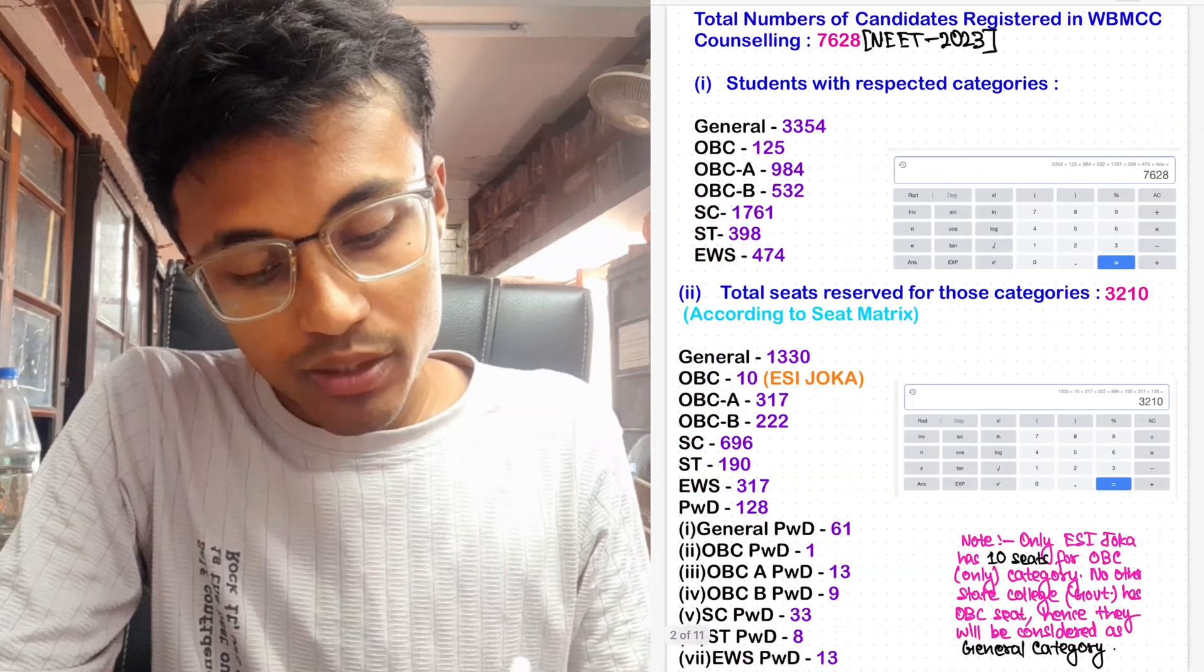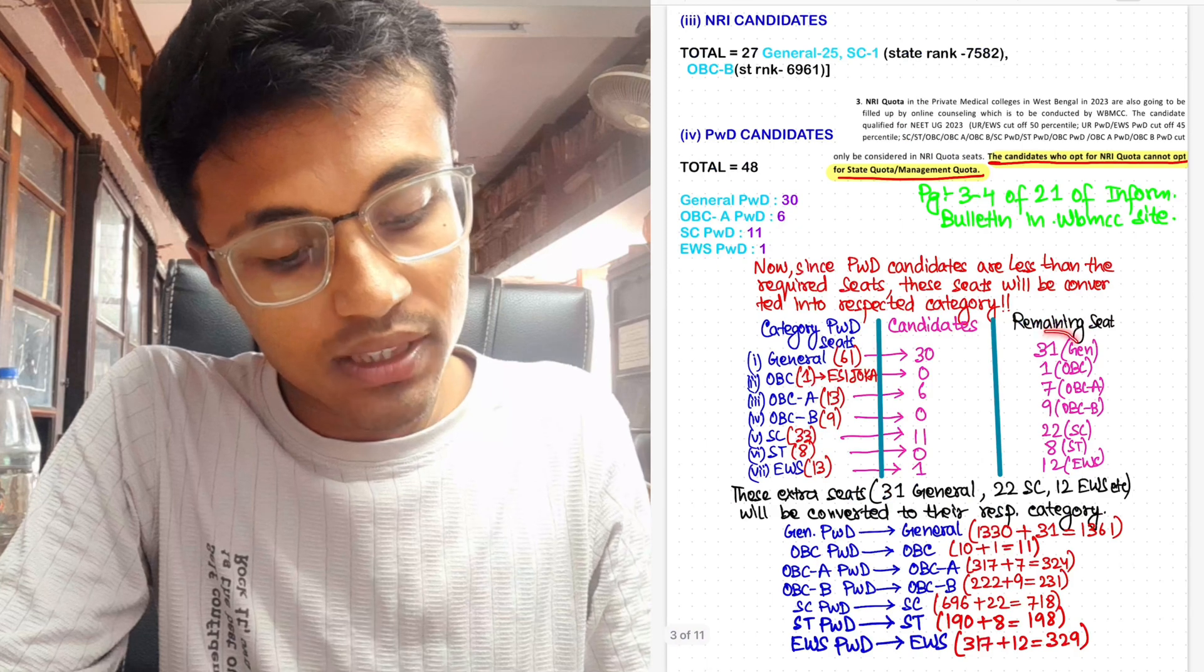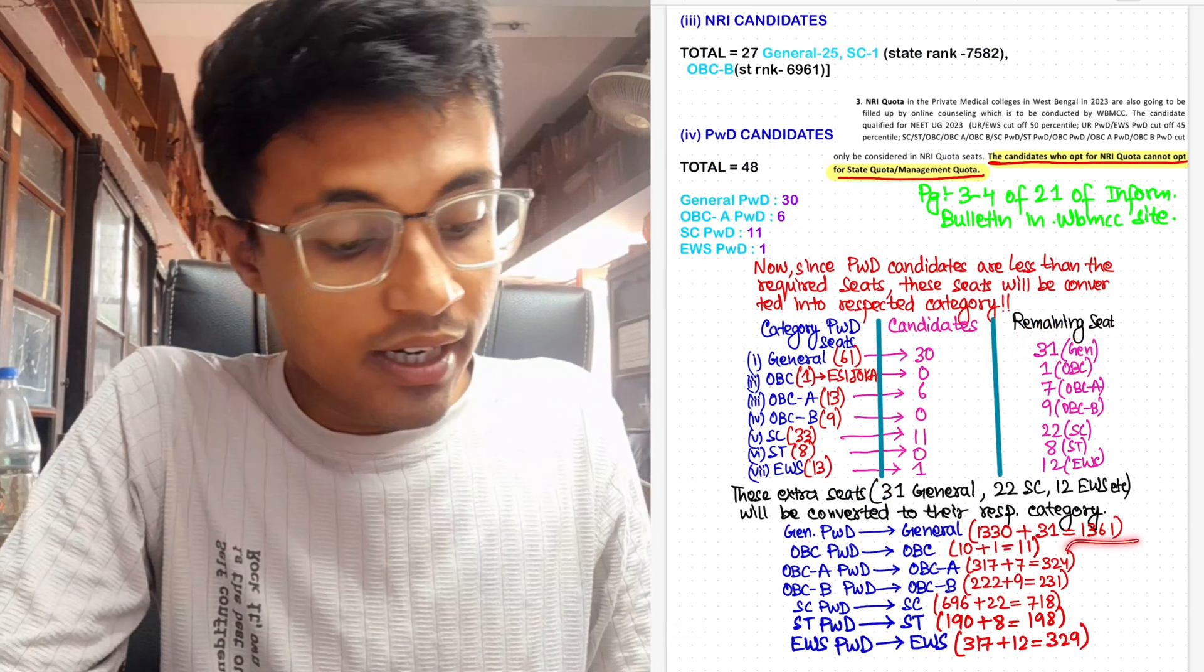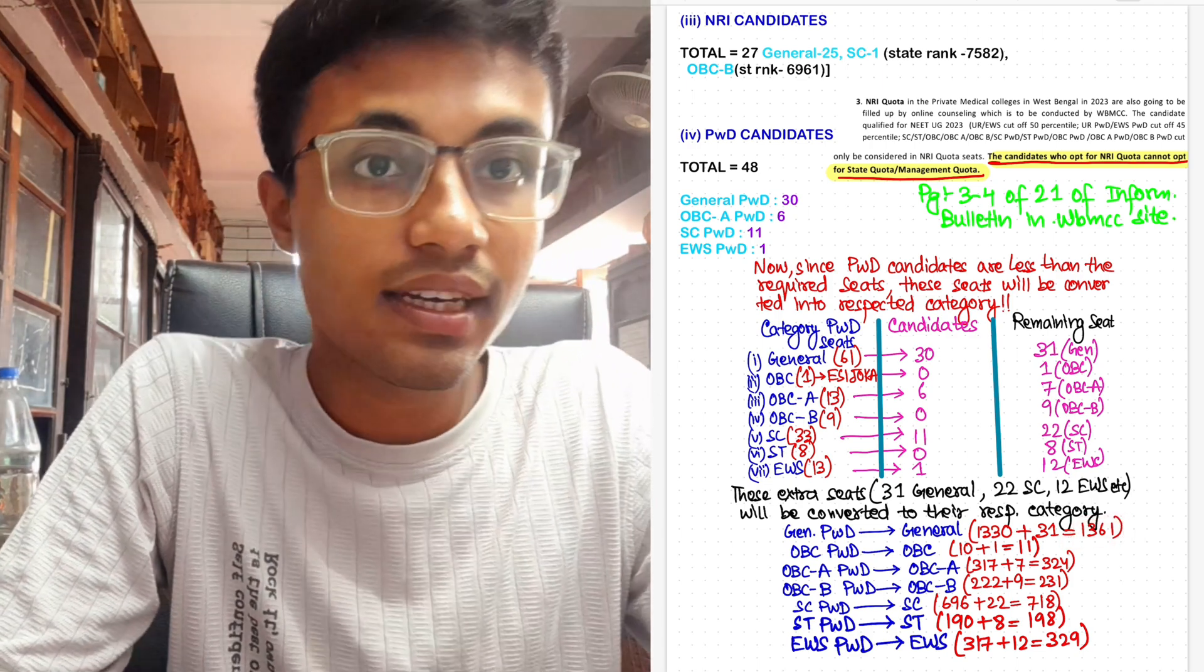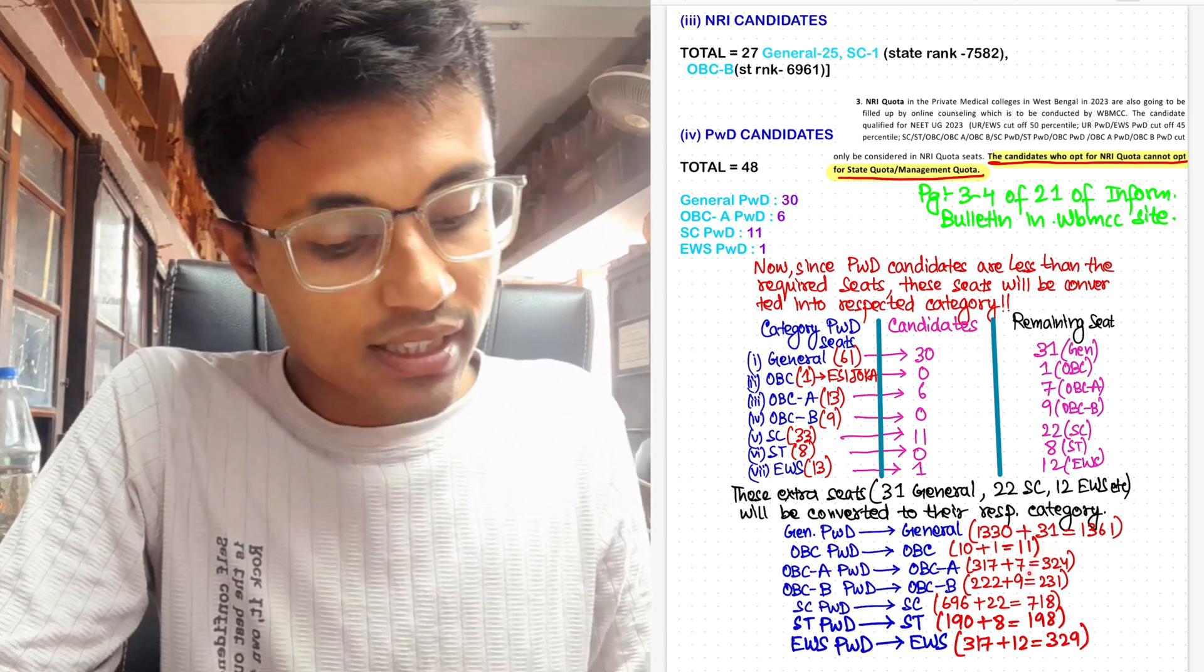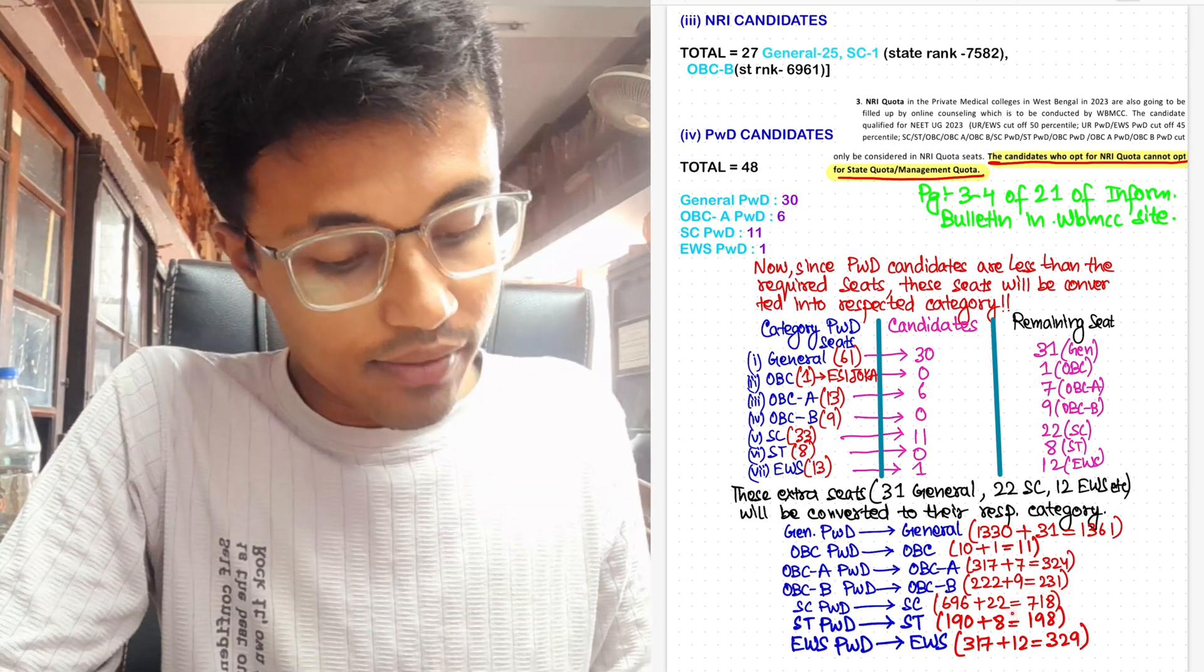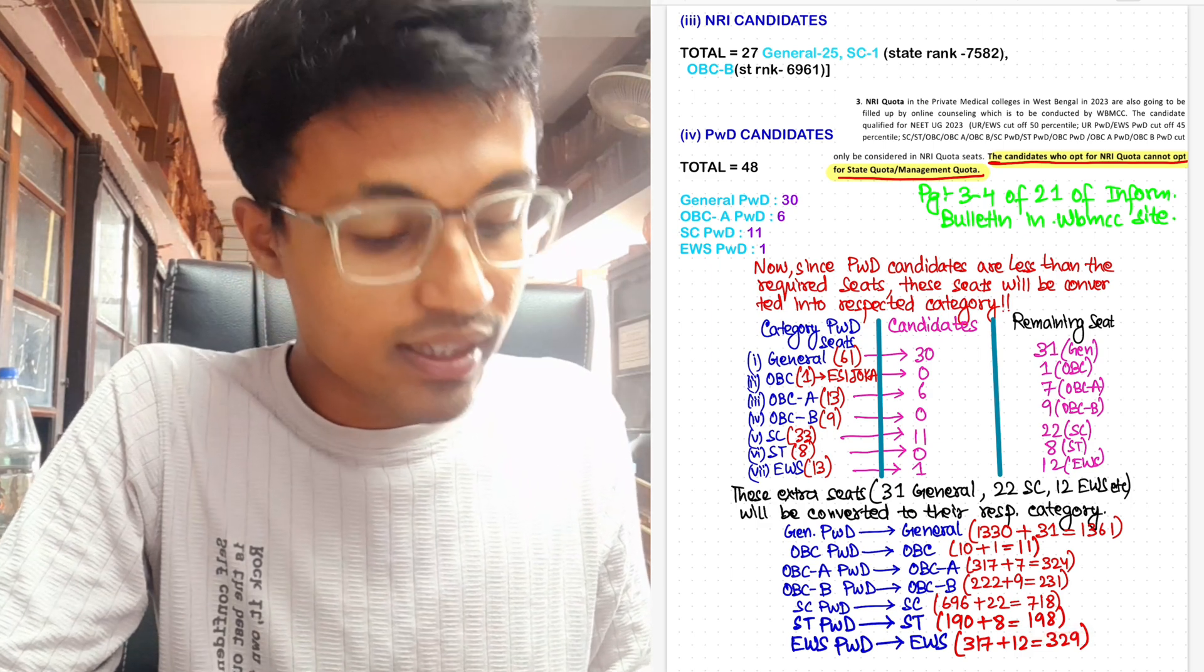So the earlier amount of seats allotted in general category was 1,330, but these 31 seats which are remaining seats from the PWD category will be added, and a net total of 1,361 seats will be there for general category in this year's counseling. Similarly, for OBC-PWD it is 116, OBC-A-PWD it is 324, OBC-B it is 231, SC it is 718, ST-PWD is 198, and EWS-PWD is 329.